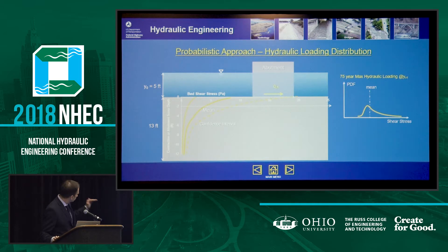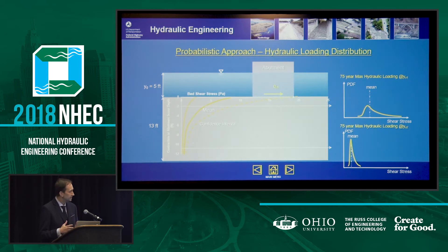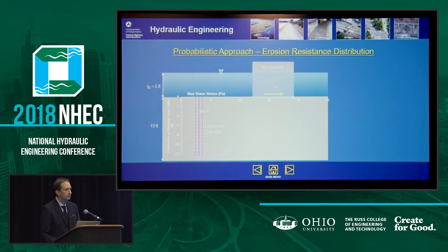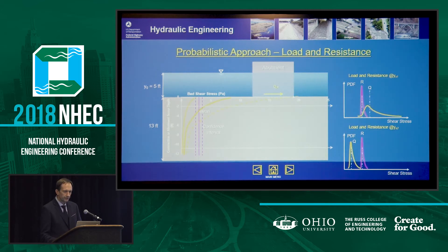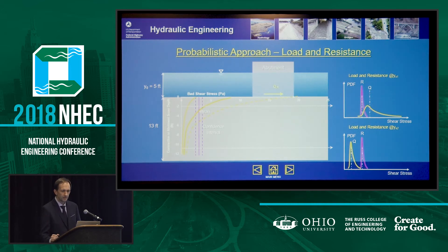Now consider the distribution of the soil resistance layer — this gives the uncertainty of that layer, and the method can be extended to multi-layers. Merging both distributions: at a shallow depth, the resistance is to the left of the load — bad news, meaning load exceeds resistance, so erosion occurs. At a lower depth, the resistance is higher than the load, indicating scour stops or ceases.